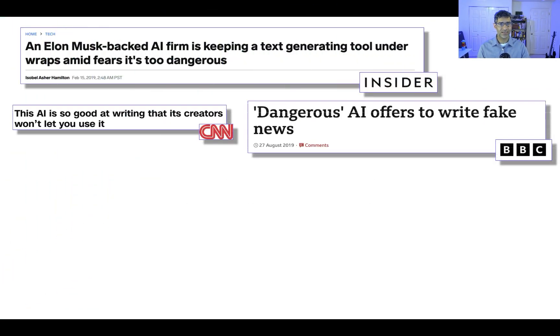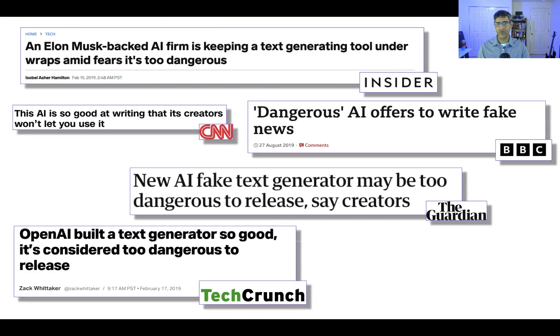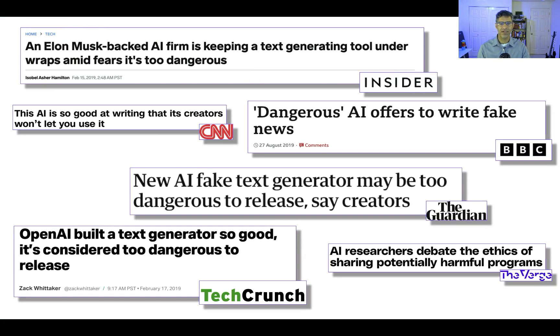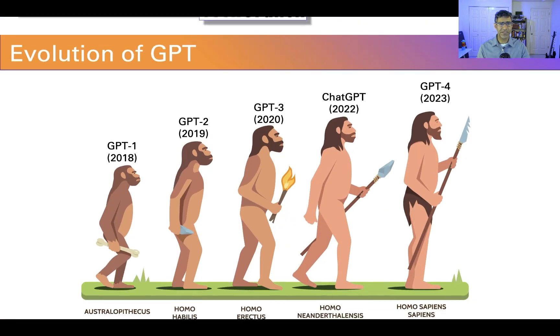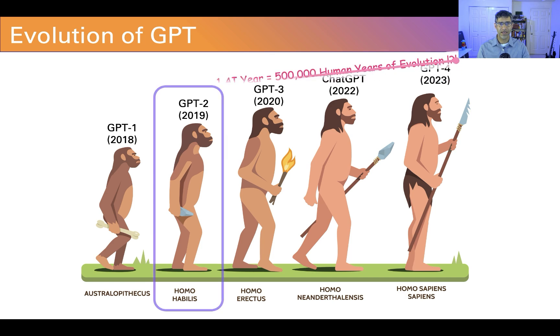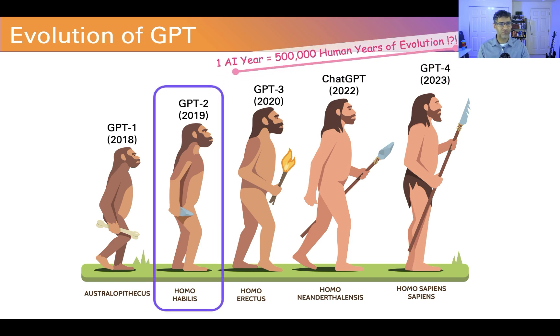Hello. I want to share a secret with you about learning AI that's hiding in plain sight. I'm about to share with you the source code for a real large language model — so real, in fact, it was once considered too dangerous to release. It's called GPT-2, and it's an early precursor to the more famous ChatGPT.